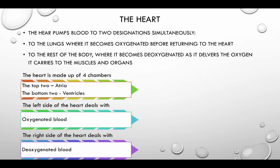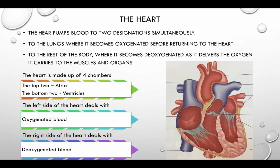The heart pumps blood to two destinations simultaneously: to the lungs, where it becomes oxygenated before returning to the heart, and to the rest of the body, where it becomes deoxygenated as it delivers oxygen to the muscles and organs.